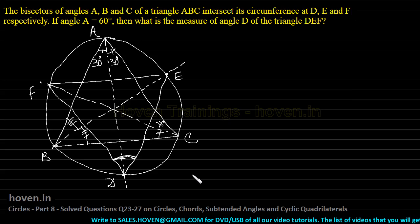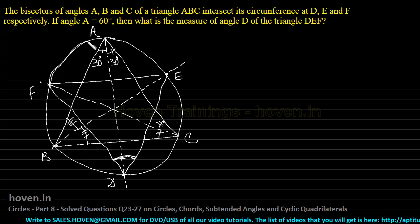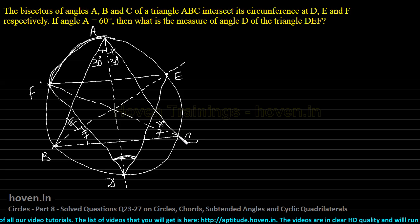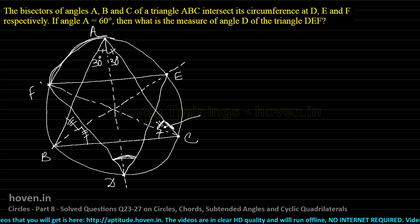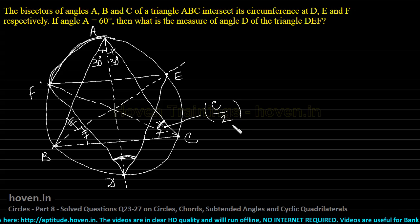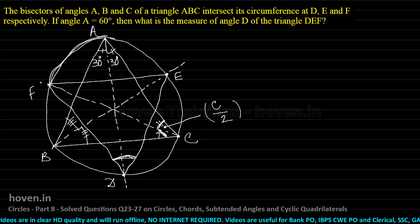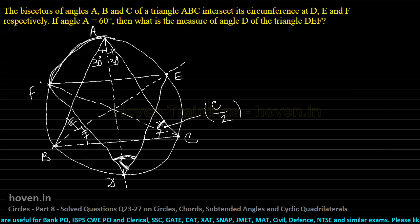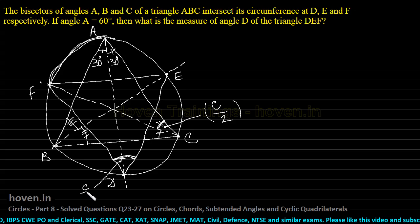Take a look at arc AF. This arc subtends an angle at point C on the periphery of the circle. That angle is C/2, because CF is the bisector of angle C. The same arc AF also subtends the same angle C/2 at point D.